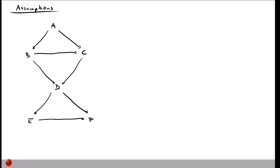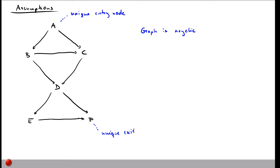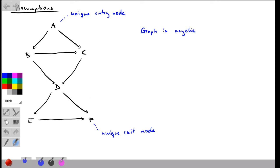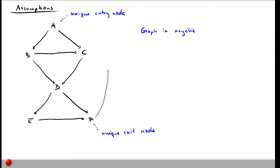Illustrating these assumptions on our example graph: the graph is indeed acyclic with no loops. Node A is the unique entry node and node F is the unique exit node. The last assumption adds an artificial back edge from F to A, which will be used in the algorithm.